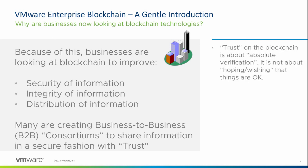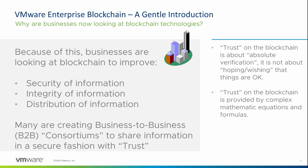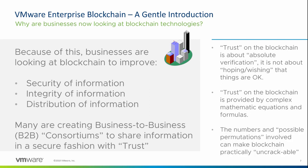Trust is something I want to come onto again, because trust on the blockchain is about absolute verification. It's not about hoping and wishing that things are okay or a gut feeling — it's about absolute verification. Trust on the blockchain is provided by complex mathematical equations and formulas, and the numbers and possible permutations involved in these formulas mean that the blockchain is practically uncrackable with modern computing hardware. Just as an example, if you wanted to brute force the Bitcoin network by buying lots of equipment and trying to have more than everybody else, you'd need to invest roughly 90 billion dollars every 10 minutes. That's how unfeasible it is to try and break this just by buying equipment.